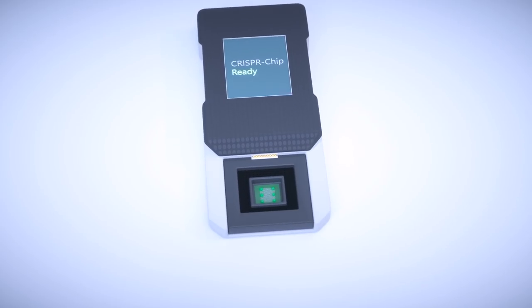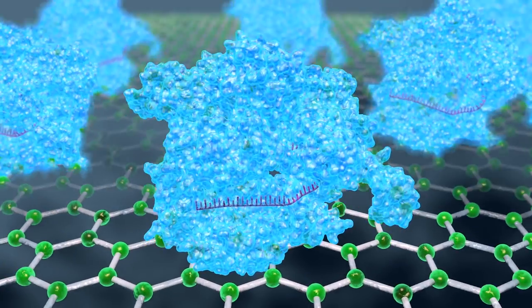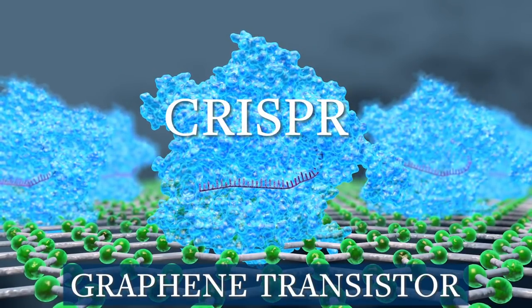CRISPR chip is a handheld device that combines thousands of CRISPR molecules with a graphene transistor.